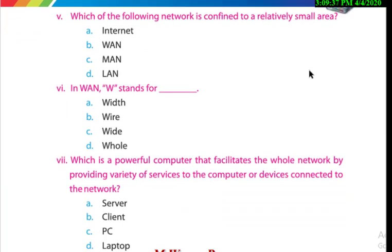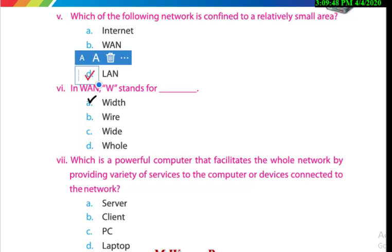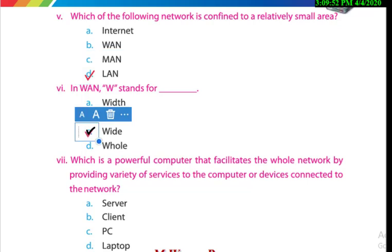Which of the following networks is confined to a relatively small area? That is LAN — Local Area Network. And WAN — W stands for Wide — Wide Area Network. WAN stands for Wide Area Network.